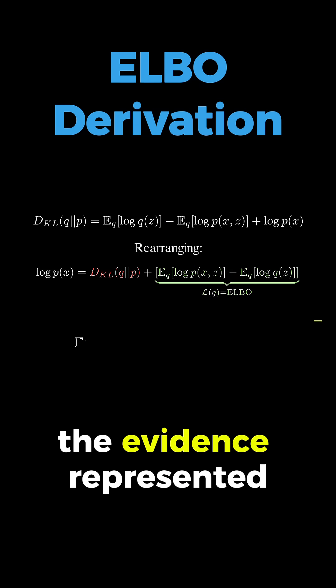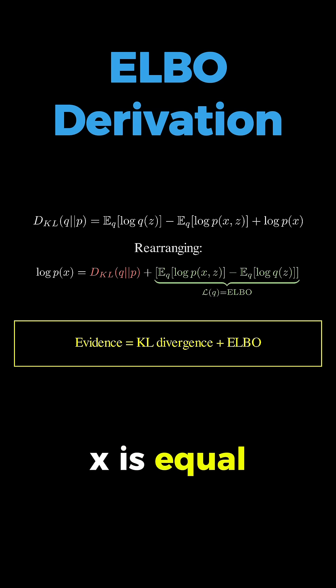So, the evidence represented by P of X is equal to the KL divergence plus the ELBO.